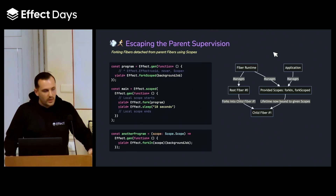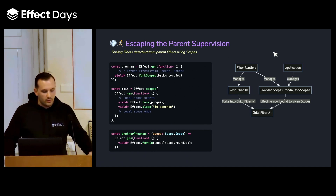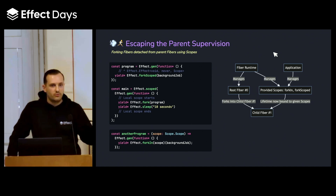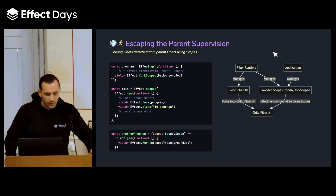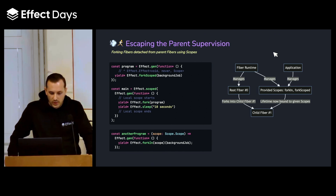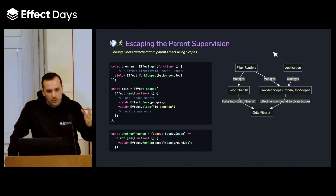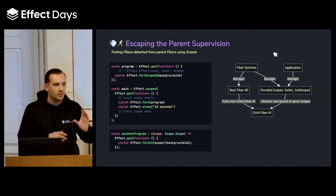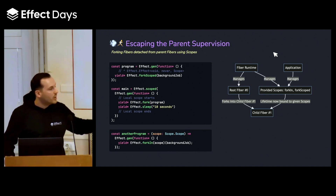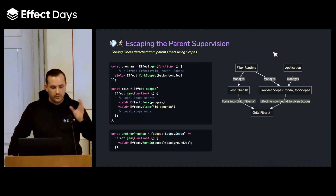If for some reason you want to escape that kind of supervision — in other words, you want fibers to outlive their parents — then you can use other ways of forking fibers to manage their lifetime differently. When you fork into scopes, you delegate the management of lifetime to scopes rather than to parent fibers. You can decorrelate them, but still preserve all the principles of Structured Concurrency — it's just that you don't have the same parents anymore.